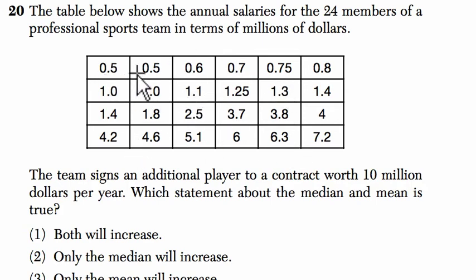So we've got half a million, half a million, 0.6 of a million, all the way up to higher numbers like 5.1 and 7.2 million. Team signs an additional player to a contract worth $10 million per year, which statement about the median and mean is true.